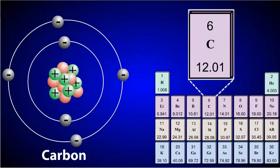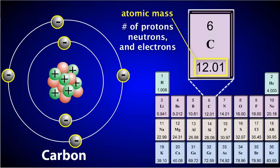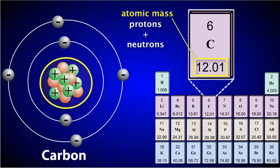The number that appears below the element symbol is called the atomic mass. The mass of an atom depends on the number of protons, neutrons, and electrons it contains. However, since electrons are so small, their mass is assumed to be zero in most calculations. Therefore, the atomic mass of an atom is equal to the sum of its protons and neutrons.